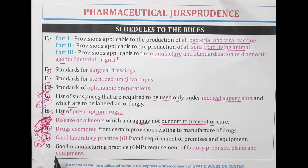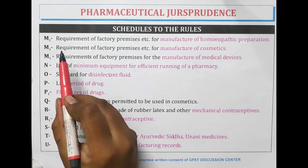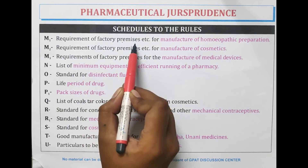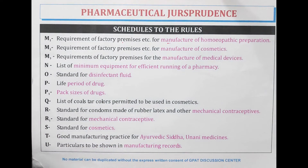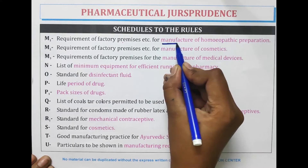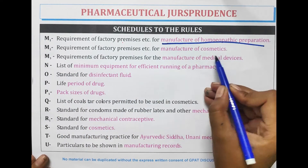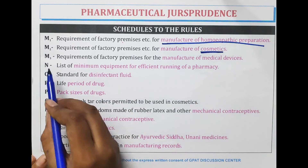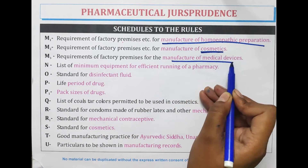Schedule M — M is for GMP, good manufacturing practices — the requirement for factory premises, plant, and equipment. Schedule M1 covers the requirement for factory premises for the manufacturing of homeopathic preparations. Schedule M2 covers the requirement of factory premises for the manufacture of medical devices.